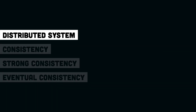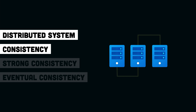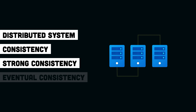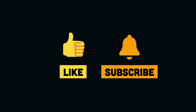To summarize: a distributed system is a system with state split across multiple different systems. Consistency is having a consistent state across all nodes of a distributed system. Strong consistency means the system is never in an inconsistent state. Eventual consistency is having the system in an inconsistent state for some time, but the data is eventually going to be consistent. That is all for this one — I hope you enjoyed this lesson. Thank you for watching and I will see you in the next one.